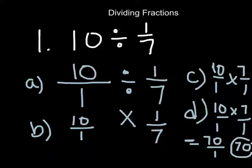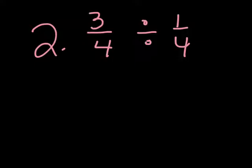So that means that there are 70 1 sevenths in the number 10. That makes sense. Let's go ahead and go to the next example. This time I'm going to do a fraction divided by a fraction. What I'm asking myself is how many 1 fourths there are in 3 fourths. 3 fourths is my fraction. It's being divided into 1 fourth chunks. So let's write the problem out.